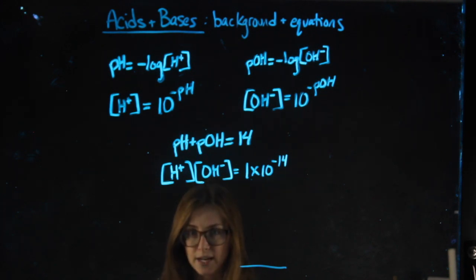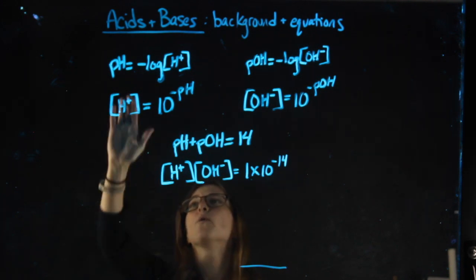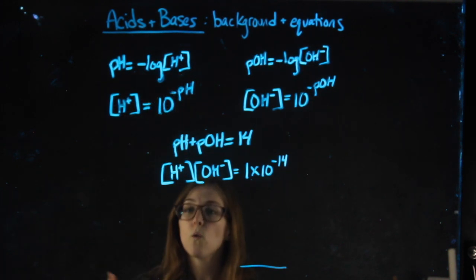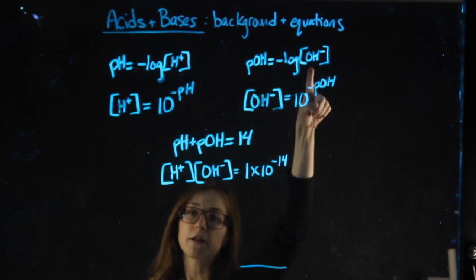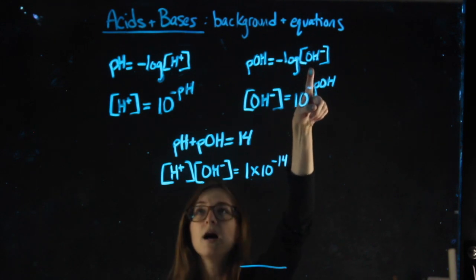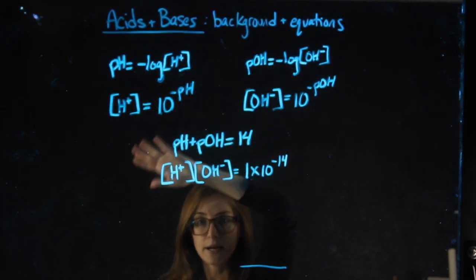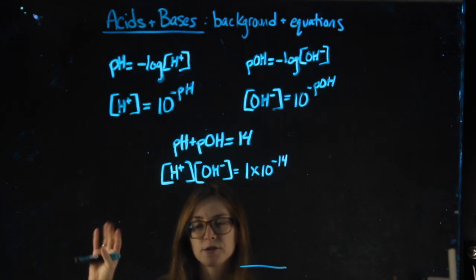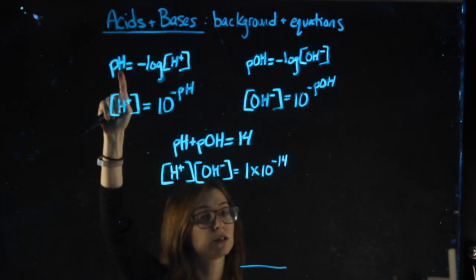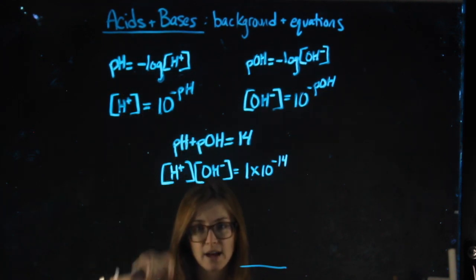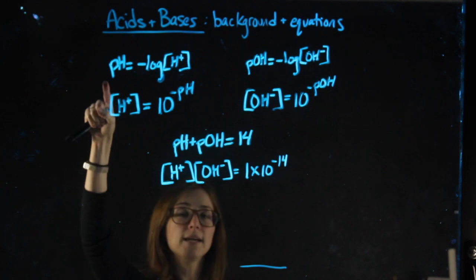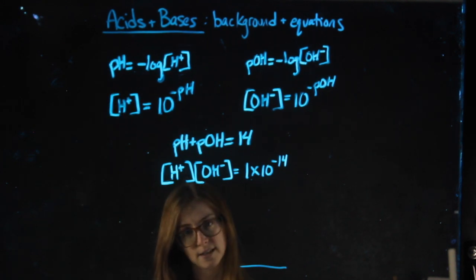So any solution can have H, can have OH. We can measure its pH by looking at how much hydrogen there is. Or we can measure its pOH by looking at how much hydroxide there is. Two different scales, pH scale or the pOH scale. When you're thinking acids are less than seven, bases are more than seven, you're thinking about pH. So acids and bases both have H. Acids and bases both have OH. Use the pH scale if you're trying to decide if something is acidic or basic.